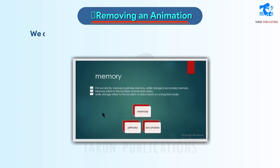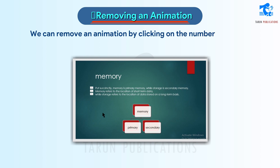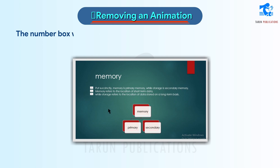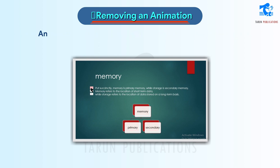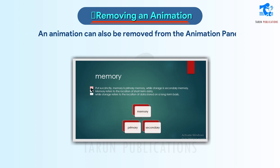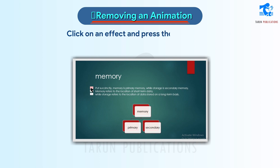We can remove an animation by clicking on the number in front of the animated object or text — the number box will appear highlighted, and we can then press the Delete key. An animation can also be removed from the Animation Pane by clicking on an effect and pressing the Delete key.